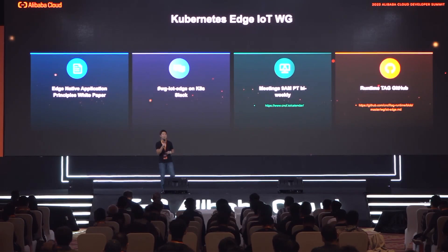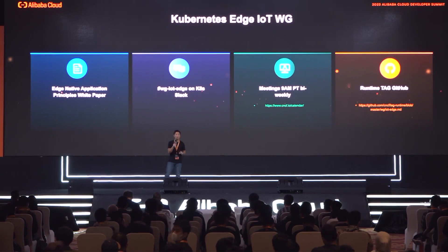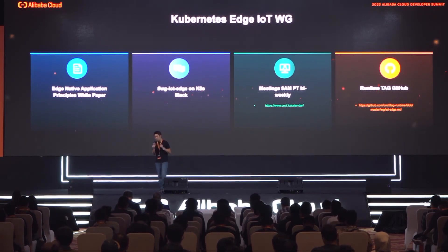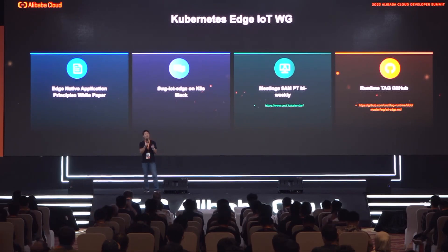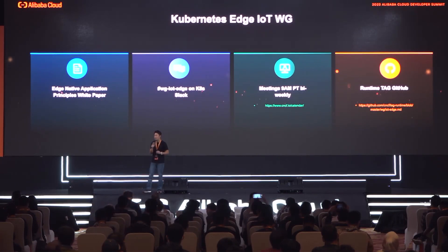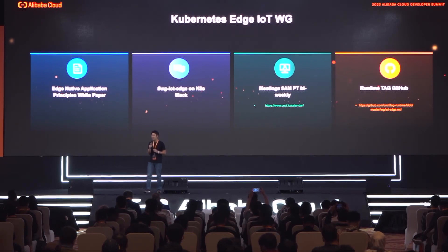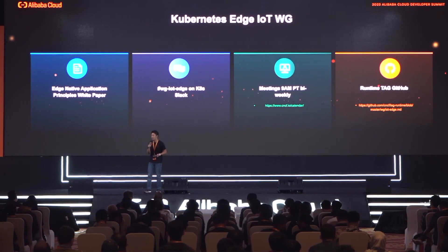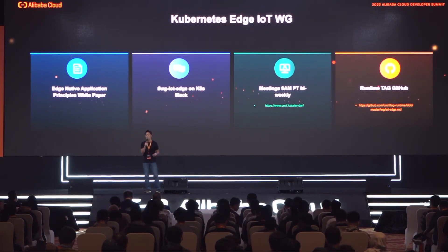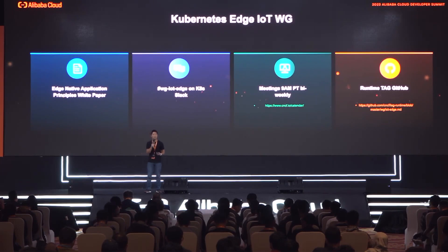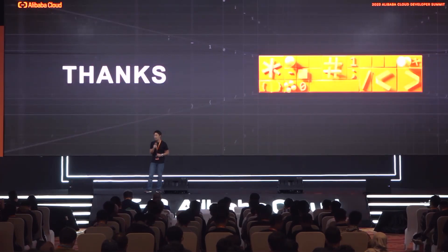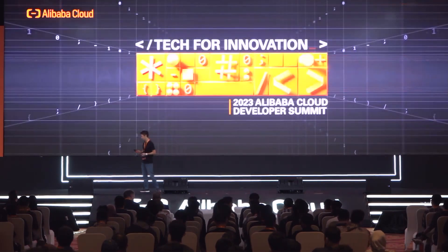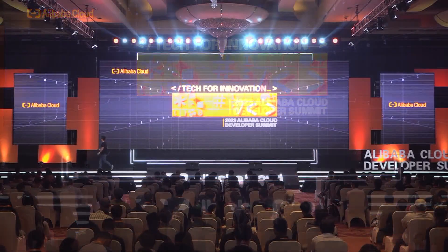That is pretty much my presentation. In the final slide, let me introduce the Kubernetes Edge IoT Working Group, of which I am a member. We are working together to address the problems and use cases mentioned in these slides. Recently we released a paper called Edge Native Application Principles, presented at KubeCon last year. This activity can be aligned with OpenYurt activity as well, and the perspective is almost the same. If you are interested, please join us and reach out. Thank you very much for your time.